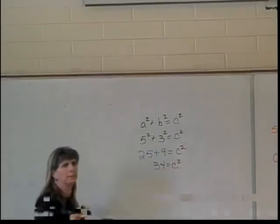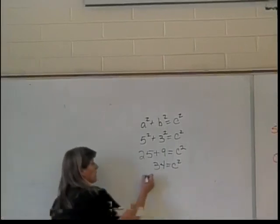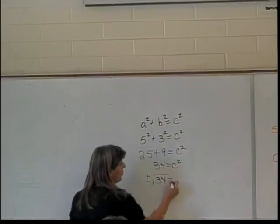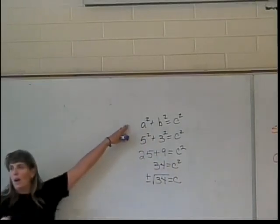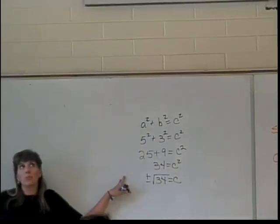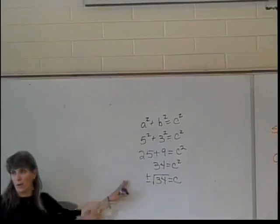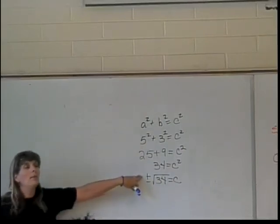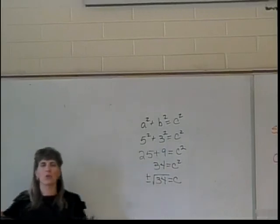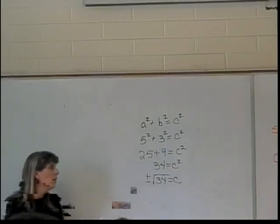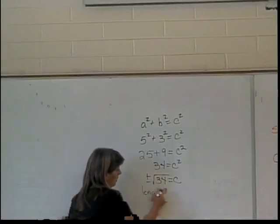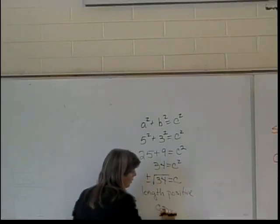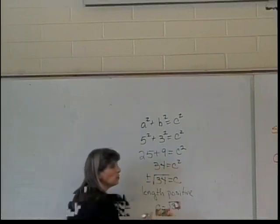So what's C? Whenever I take the square root of both sides, I get plus or minus. This is the abstract version of the process, so we have to remember the plus or minus — but then we relate it back to our triangle. Which one do we keep? We keep the positive root because length is positive. So our length C is going to be the square root of 34.